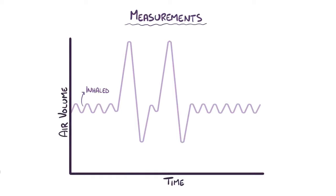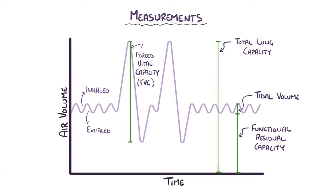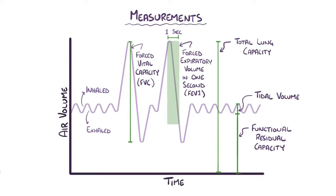There are a number of ways to measure the volume of air as it's inhaled and exhaled from the lungs. Total lung capacity is the total amount of air that the lungs can hold; tidal volume is the volume of air inhaled during normal inhalation; and functional residual capacity is the total amount of air left in the lungs after a normal exhalation. There's also the forced vital capacity, or FVC, which is the maximum amount of air exhaled after a full inhalation. The forced expiratory volume in one second, or FEV1, is the amount of air forcibly breathed out in one second after a maximum inhalation. The normal ratio of FEV1 to FVC is 0.8, meaning that 80% of the air should be able to get forced out in the first second.